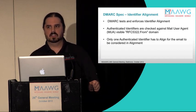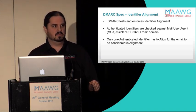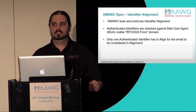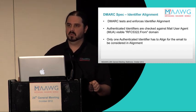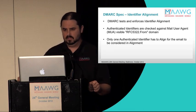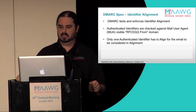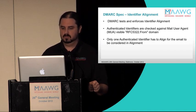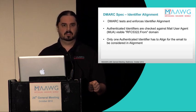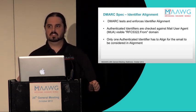Now we start getting into the nuts and bolts. Identifier alignment is kind of what DMARC is all about. It is the layer we are adding on top of DKIM and SPF, and it is the test we perform to decide whether this mail conforms or not. The way this works is the authenticated identifiers in the email are compared to the domain in the RFC 5322 From header field. We chose this because it's the address that most users see.